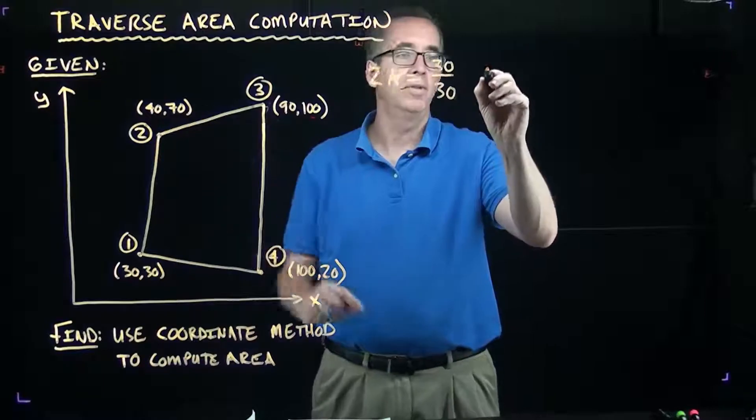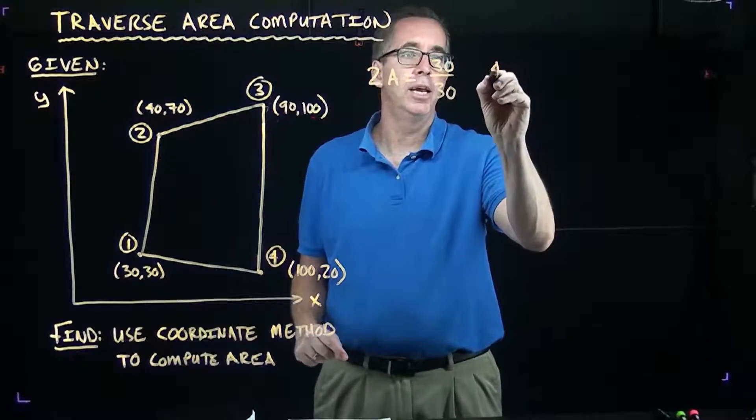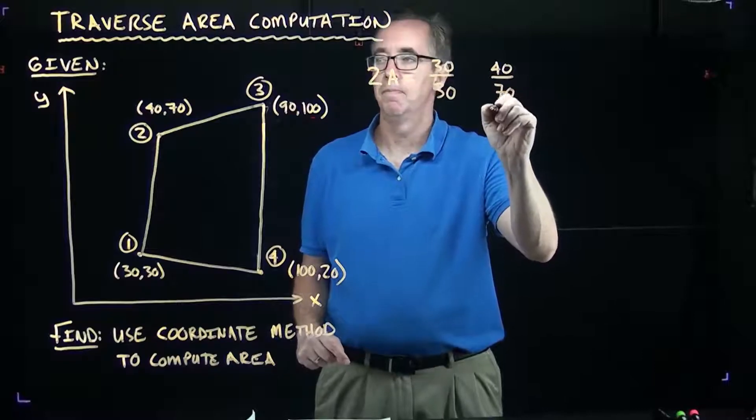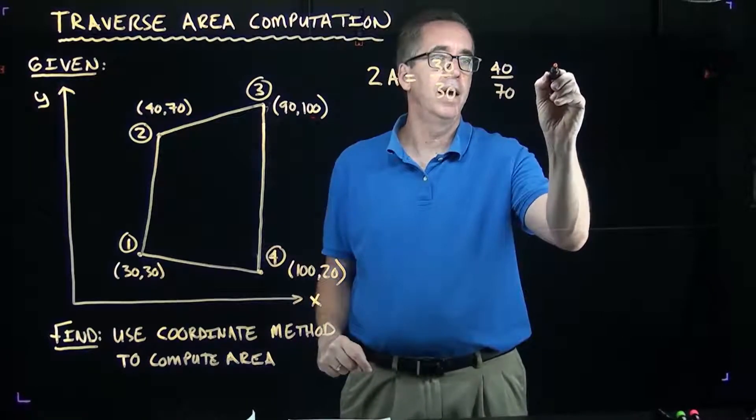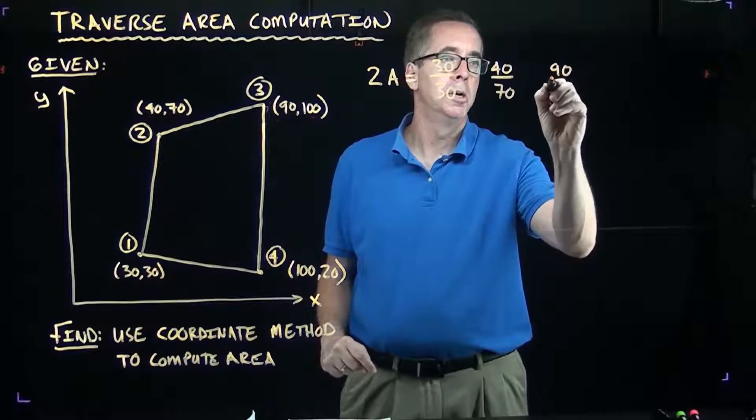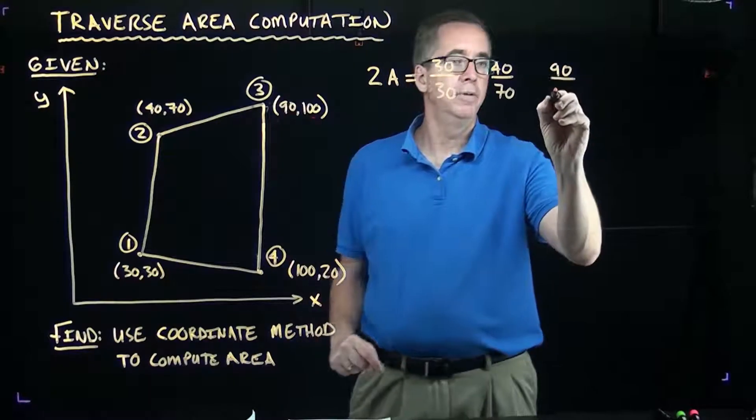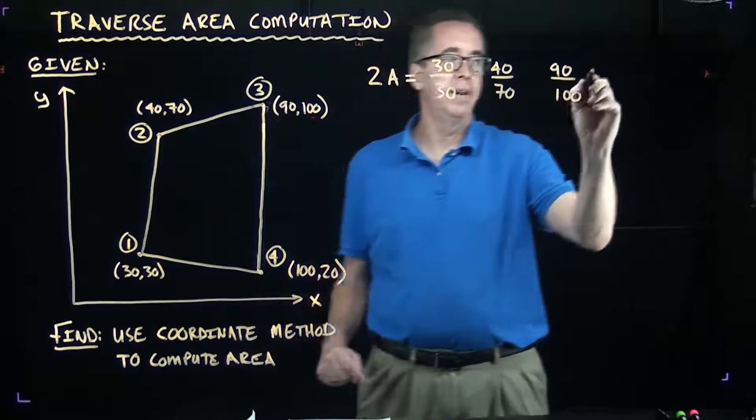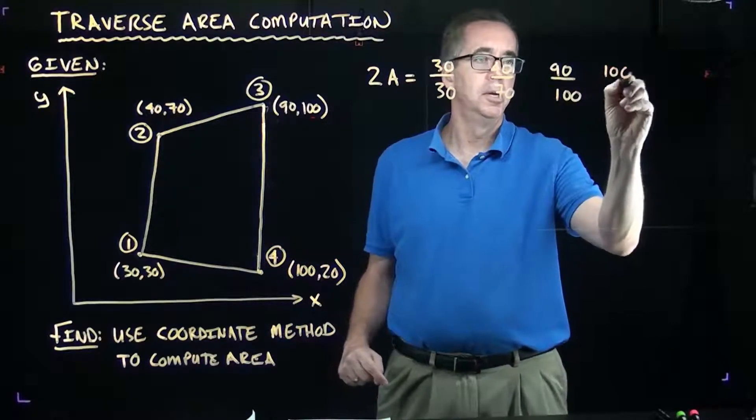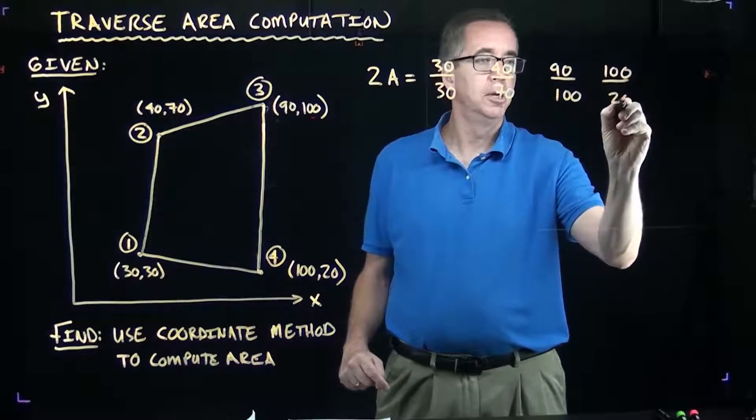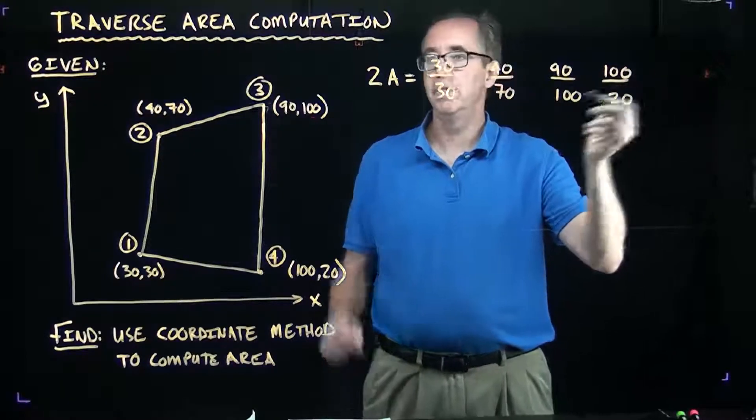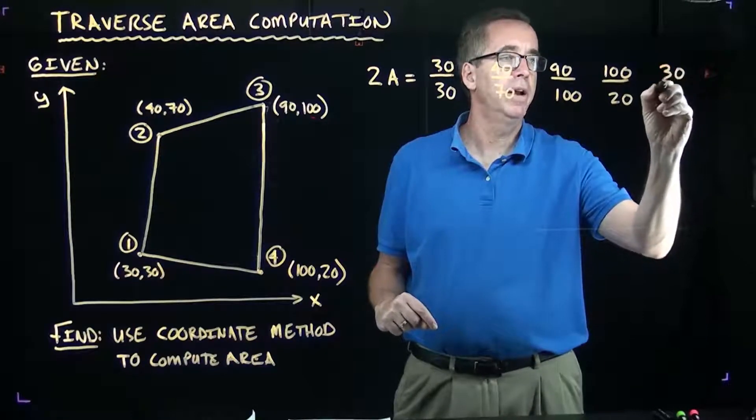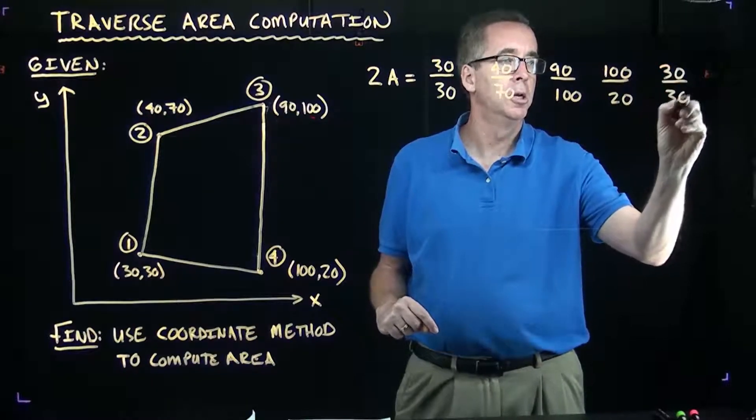Then we have at 0.2, we have an X of 40, a Y of 70. At 0.3, we have an X of 90 and a Y of 100. At 0.4, we have an X of 100 and a Y of 20. And then last but not least, we repeat the first one. So, your very first point, you repeat. So, there we have the 30 over 30.